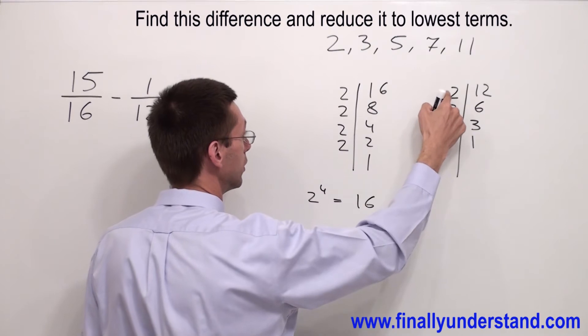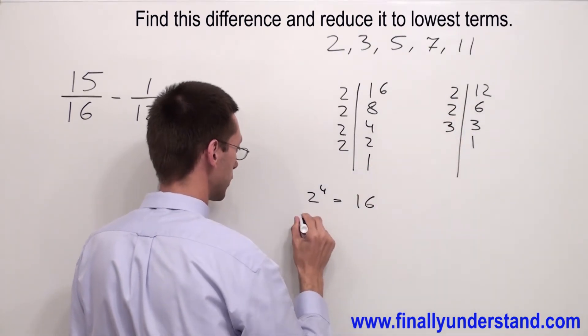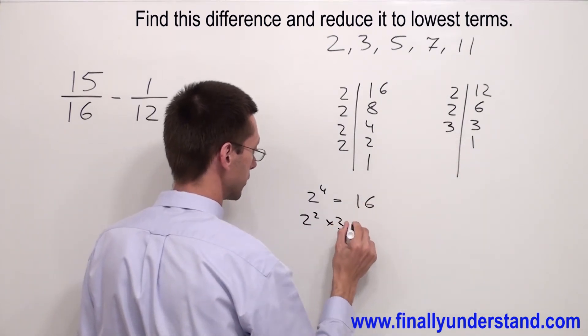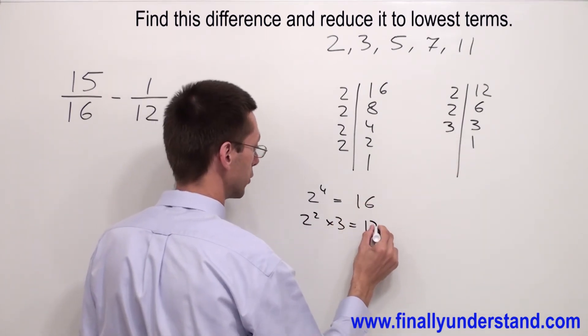Now, 2 times 2 I can write like 2 to the 2nd power times 3 equals 12.